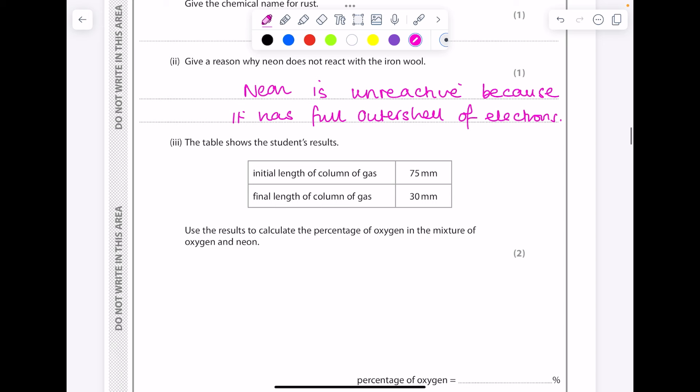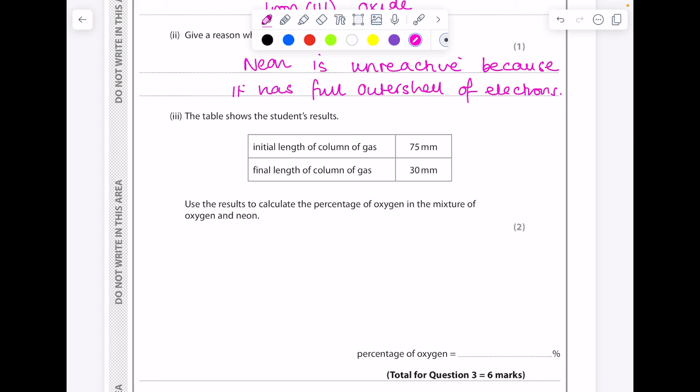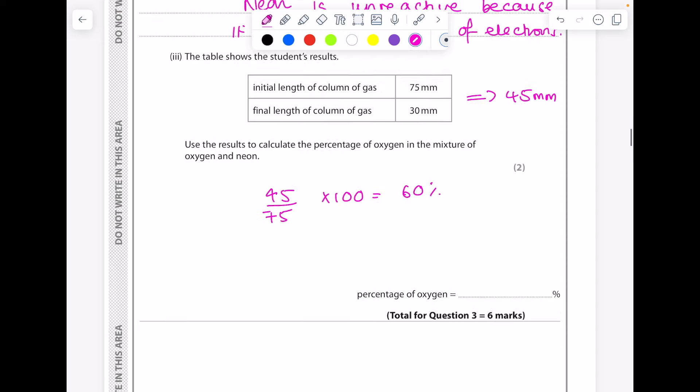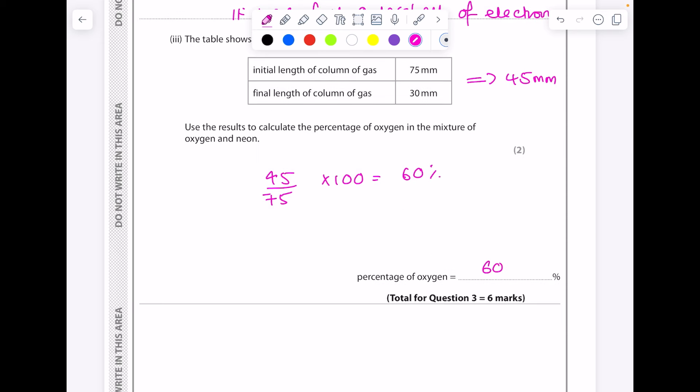The table shows the student's results. Use the results to calculate the percentage of oxygen in the mixture of oxygen and neon. So work out the difference between those two heights, it's 45mm. And then you do 45 over the original column height times by 100 to get 60%.